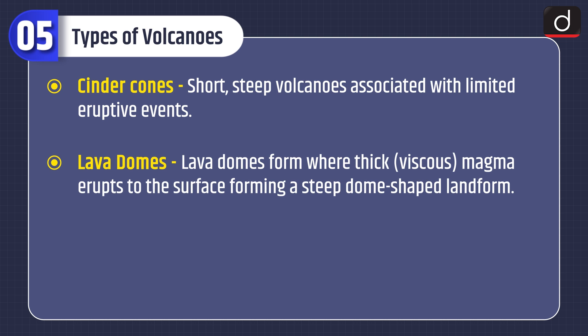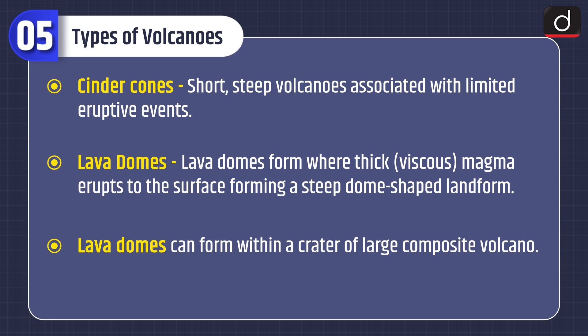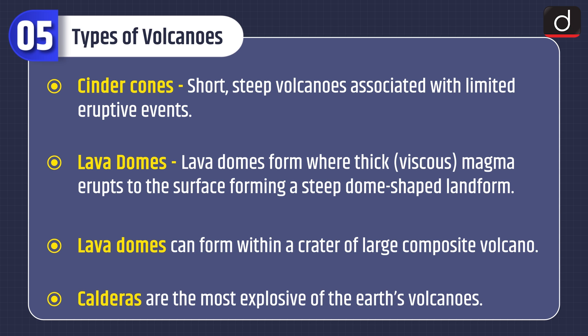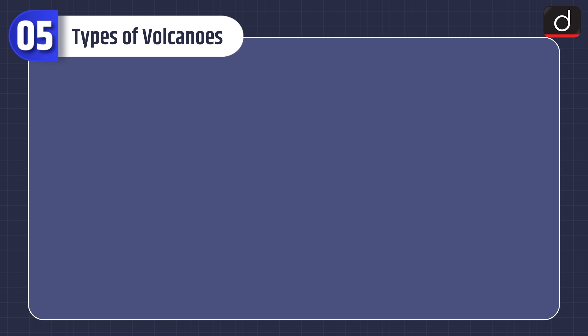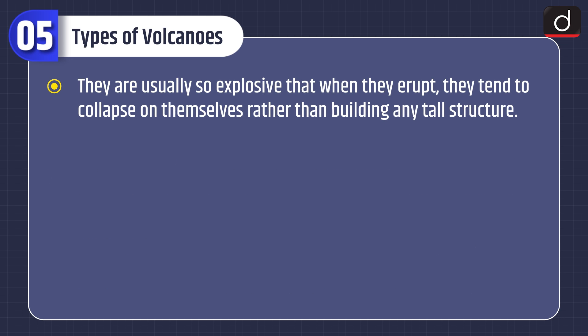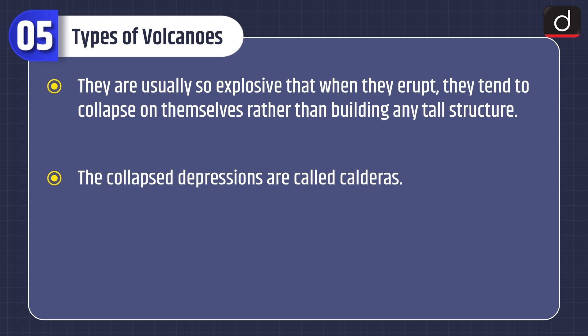Lava domes form where thick, viscous magma erupts to the surface, forming a steep dome-shaped landform. Lava domes can form within a crater of a large composite volcano. Calderas are the most explosive of the Earth's volcanoes. They are usually so explosive that when they erupt, they tend to collapse on themselves rather than building any tall structure. The collapsed depressions are called calderas.